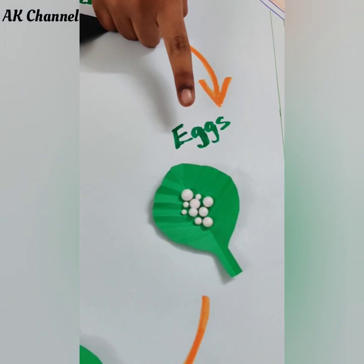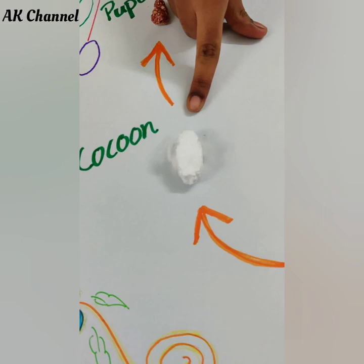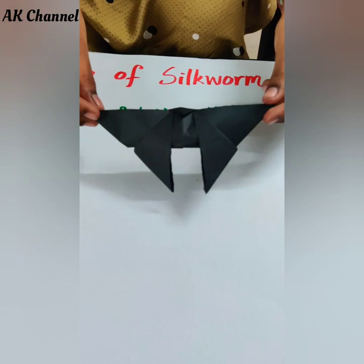Friends, have a look at this chart of the life cycle of silkworm. It contains five stages: Stage 1 - Eggs, Stage 2 - Silkworm, Stage 3 - Cocoon, Stage 4 - Pupa, Stage 5 - Adult Moth. Let us know more about these stages.